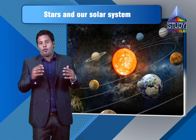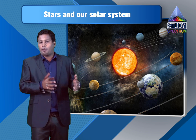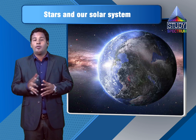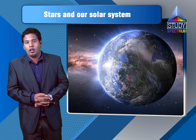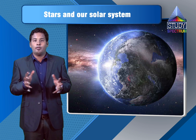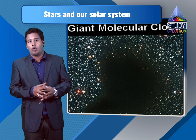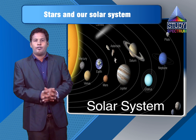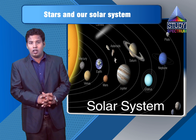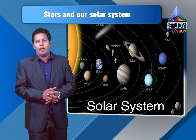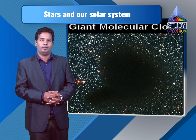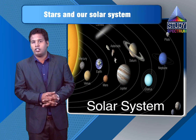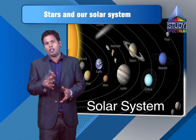When did our solar system form? Our solar system is assumed to have formed roughly 4.6 billion years ago from the gravitational collapse of a giant interstellar molecular cloud. Since we are studying the solar system, let us also talk about its members and their properties.